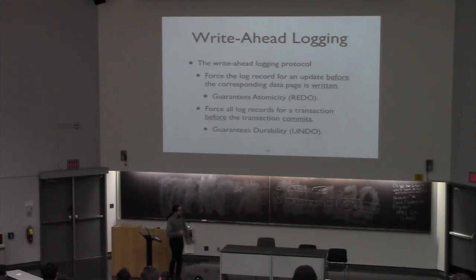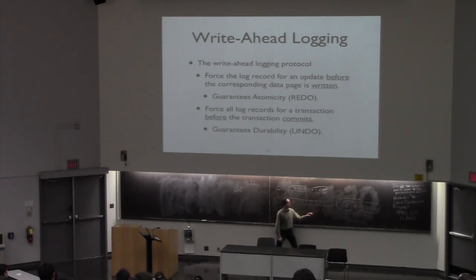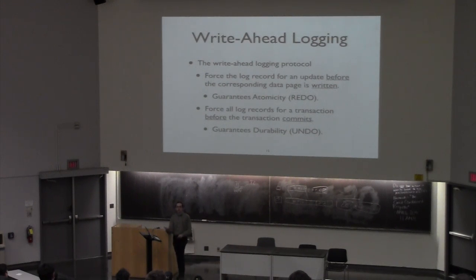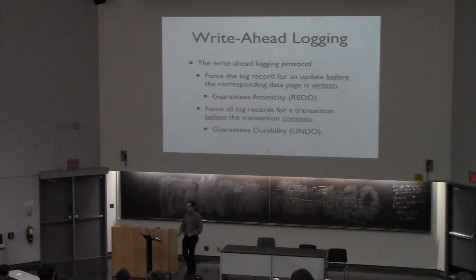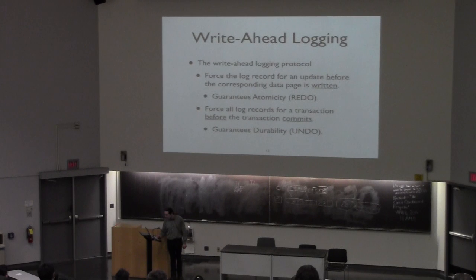The idea here is that we put enough information in this log so that if the system crashes, we have both the ability to roll a transaction forward — applying changes that weren't successfully applied — or roll the transaction back, removing changes that should not have been applied. This also helps us with aborts: if a transaction aborts but has already applied some changes to the database, you want to be able to undo those changes. The first of those is typically referred to as recovery.